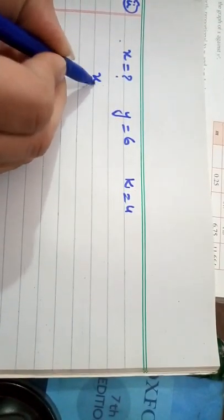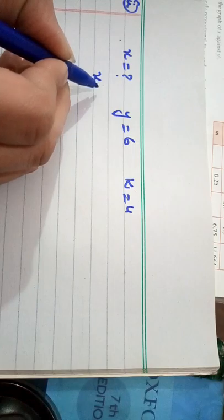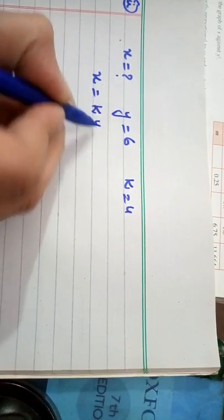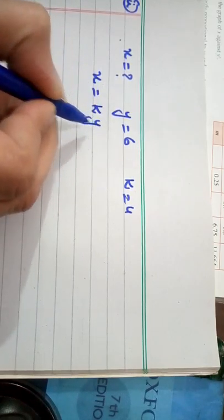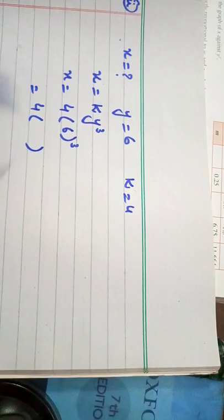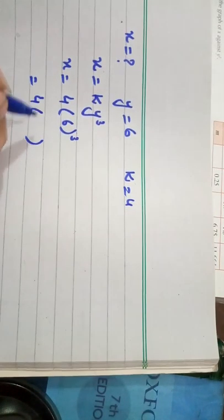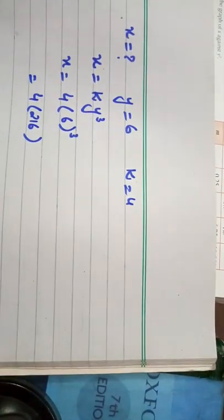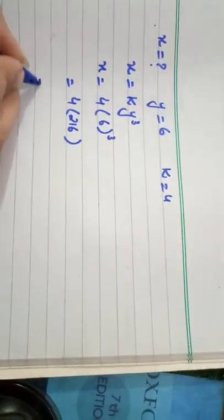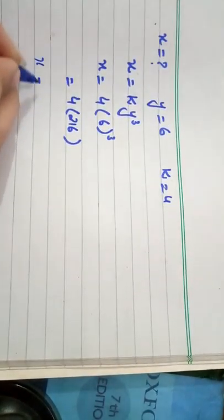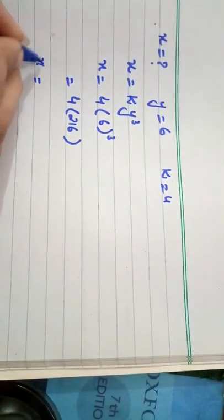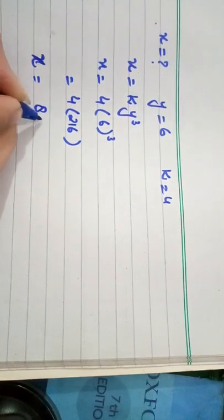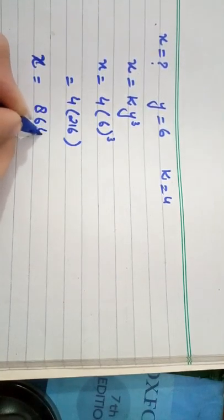By remembering this directly proportional sign, we place an equal sign and a constant variable represented by k, and also place y cubed as the other variable. This proportional sign is basically replaced with two things: the equal sign and the constant variable k.